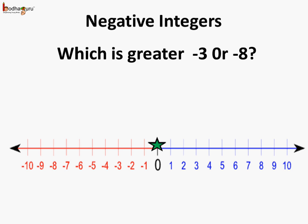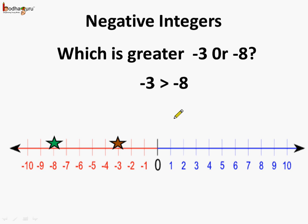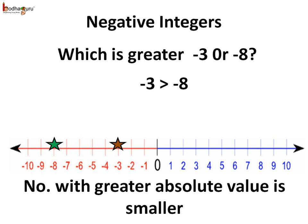Now, coming to negative integers — which is greater, minus 3 or minus 8? This is minus 3 and this is minus 8. Minus 8 lies on the left side of minus 3, so we can say minus 3 is greater than minus 8, because as we move towards the left side the value of the number decreases. In general, the number with greater absolute value is smaller. Minus 8 has a greater absolute value than minus 3, hence minus 8 is smaller than minus 3, or in other words, minus 3 is greater than minus 8.